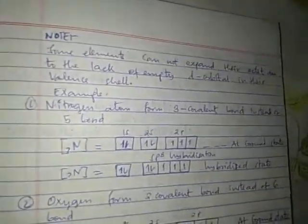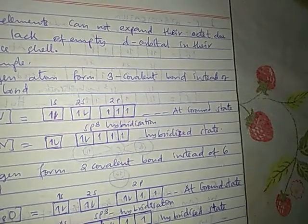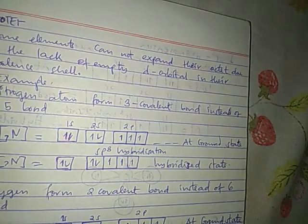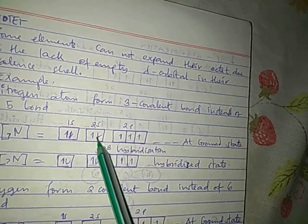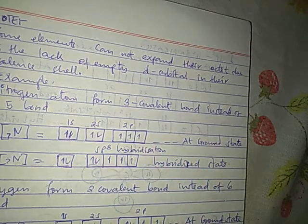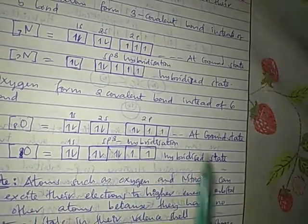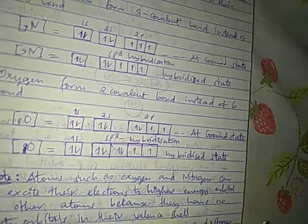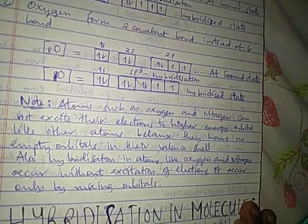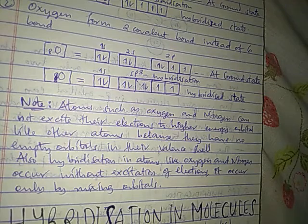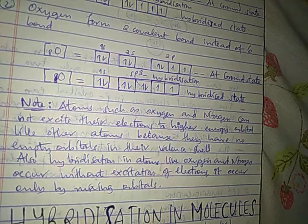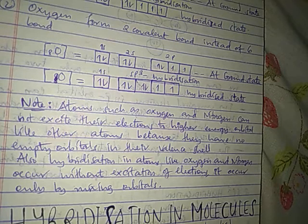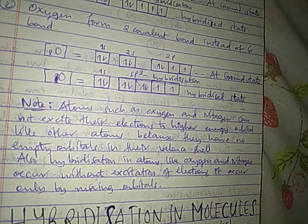It should be noted that some elements cannot expand their octet due to the lack of empty d orbitals in their valence shell. Atoms such as oxygen and nitrogen cannot excite their electrons to a higher energy orbital like other atoms, because they have no empty orbitals in their valence shell. Therefore, hybridization in atoms like oxygen and nitrogen occurs without excitation of electrons — it occurs only by mixing orbitals.